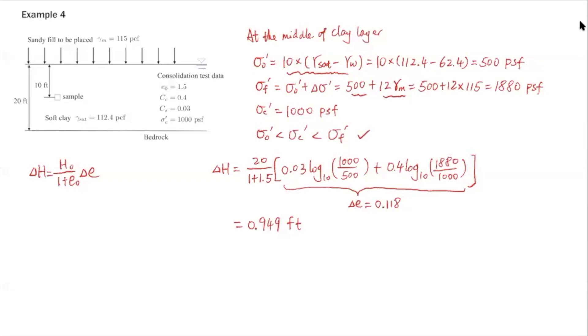You'll notice when you compare with the pre-consolidation pressure, the initial effective stress of 500 PSF is smaller than pre-consolidation pressure but smaller than the final. This is case number two in our lecture notes. Soil is going to follow the recompression curve first, then after passing the pre-consolidation pressure, it's going to follow the virgin compression or initial compression curve. You have this equation for case number two.